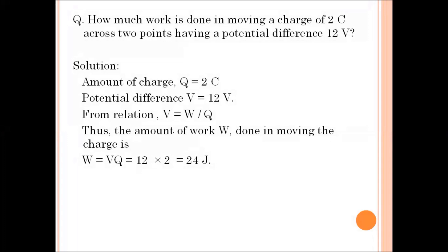Next we have a numerical based on electric potential difference. How much work is done in moving a charge of 2 coulombs across two points having a potential difference of 12 volts? We are given charge Q = 2 coulombs and potential difference V = 12 volts. From the relation V = W / Q, we calculate W = V × Q. On multiplying, we get the total work done of 24 joules.